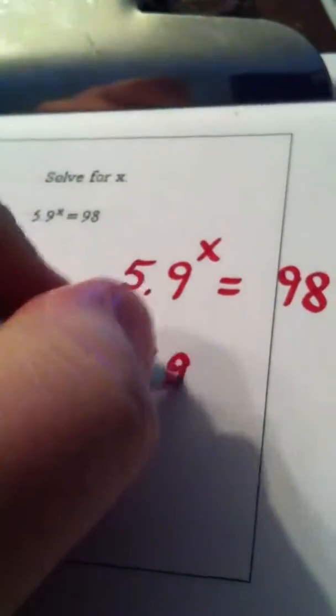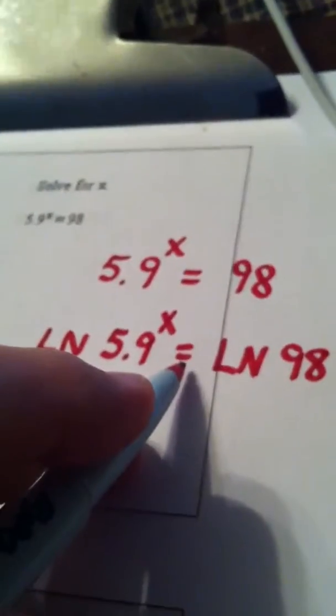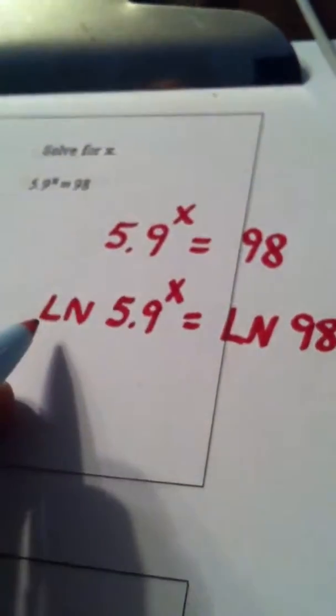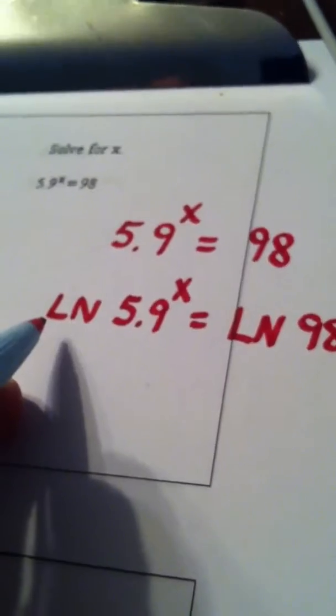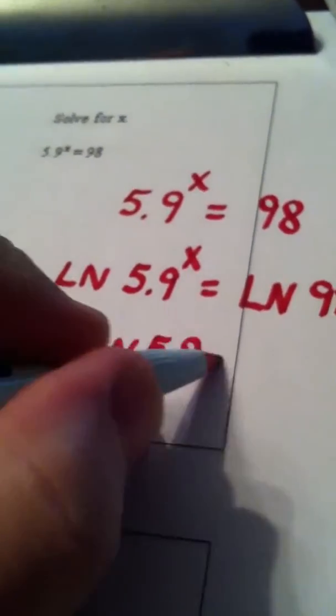So the natural log of 5.9 to the x equals the natural log of 98. In other words, two equal numbers being put into the natural log function give me the same answer. Here, using the power law, the x comes down in front, so we have x times the natural log of 5.9 equals the natural log of 98.